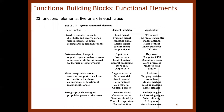For the data class, we have: input data, process data, control system, control processing, store data, and output data. If we look at a computer, we can connect these to applications: input data is the keyboard, process data is the computer, the control system is the operating system, control processing is a word processor, store data is a magnetic disk, and output data could be the printer.